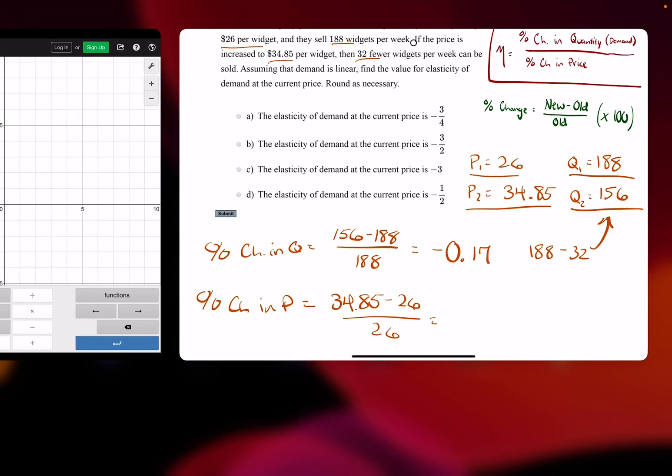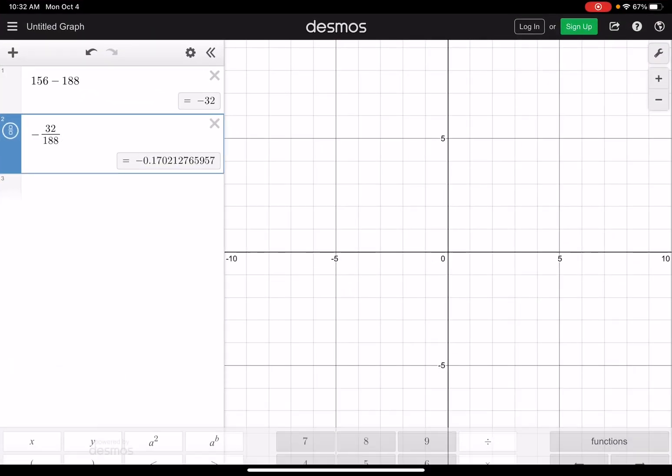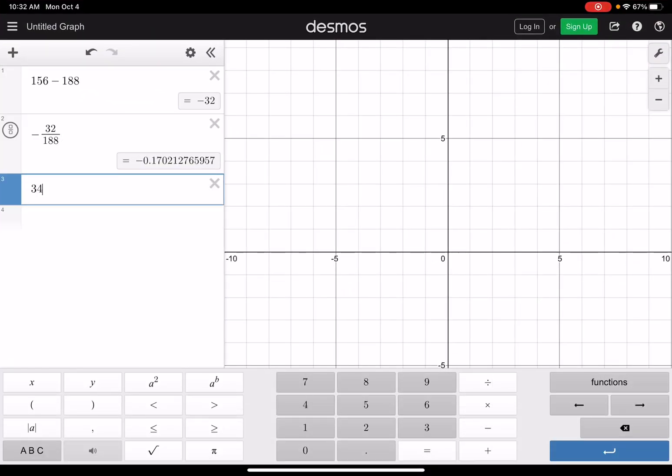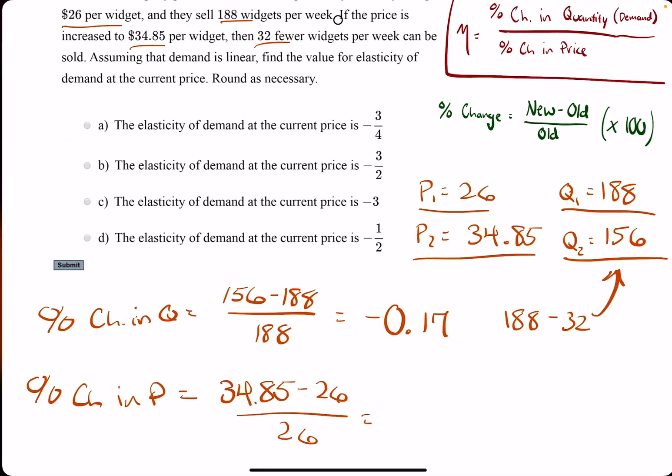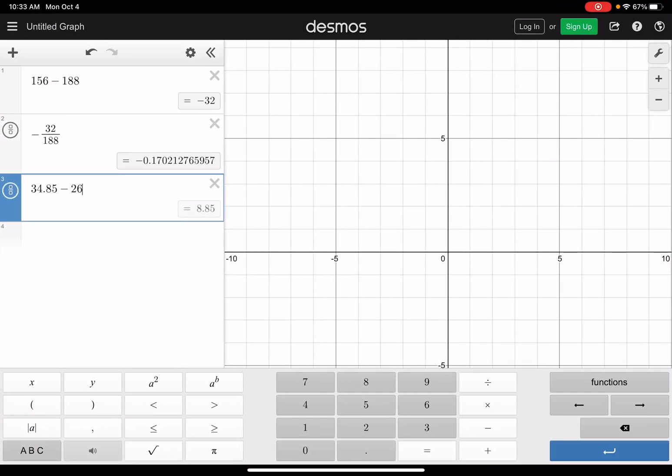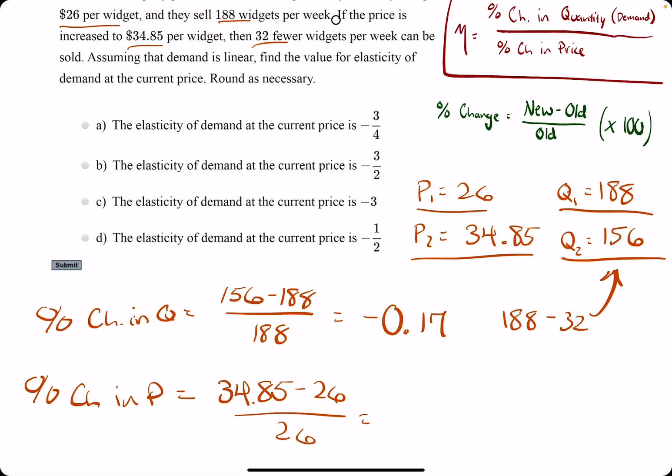Alright. So now percent change in price, $34.85 minus $26. And we'll go ahead and tack on some parentheses. Divided by the old $26. And we get 0.34.